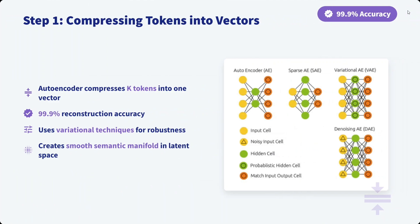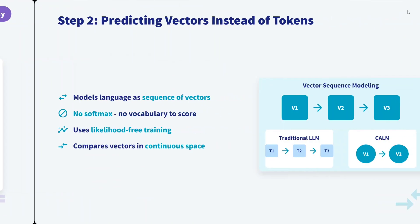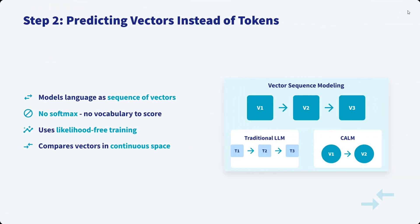The first step is compressing tokens into vectors. We use an autoencoder neural network that compresses k tokens into one vector. In the paper they mention 99.9% reconstruction accuracy — meaning they convert combinations of tokens into vectors and then back to tokens with full fidelity. It uses variational techniques and creates a smooth semantic manifold in latent space.